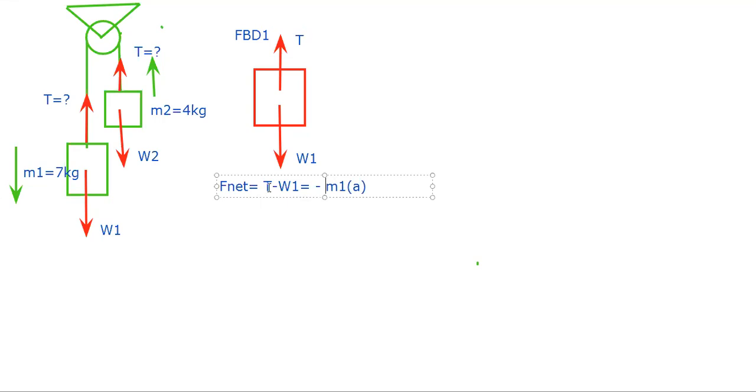Now substituting, guys. Weight one is 68.6, am I correct? Yes, sir. So this will be T minus 68.6, and it is equals to negative 7A. That's our equation one. So for our free body diagram one, we end up with one equation.